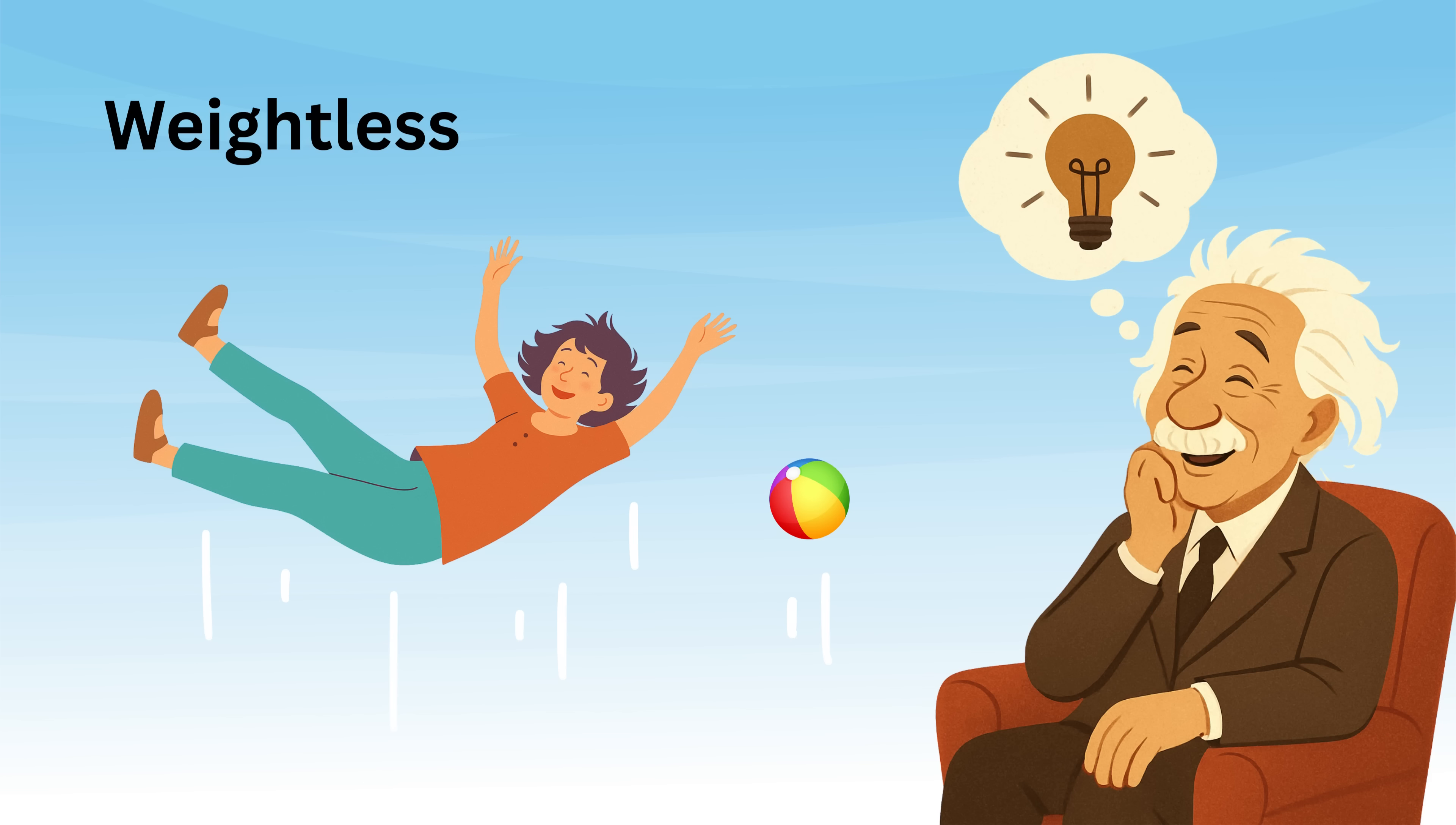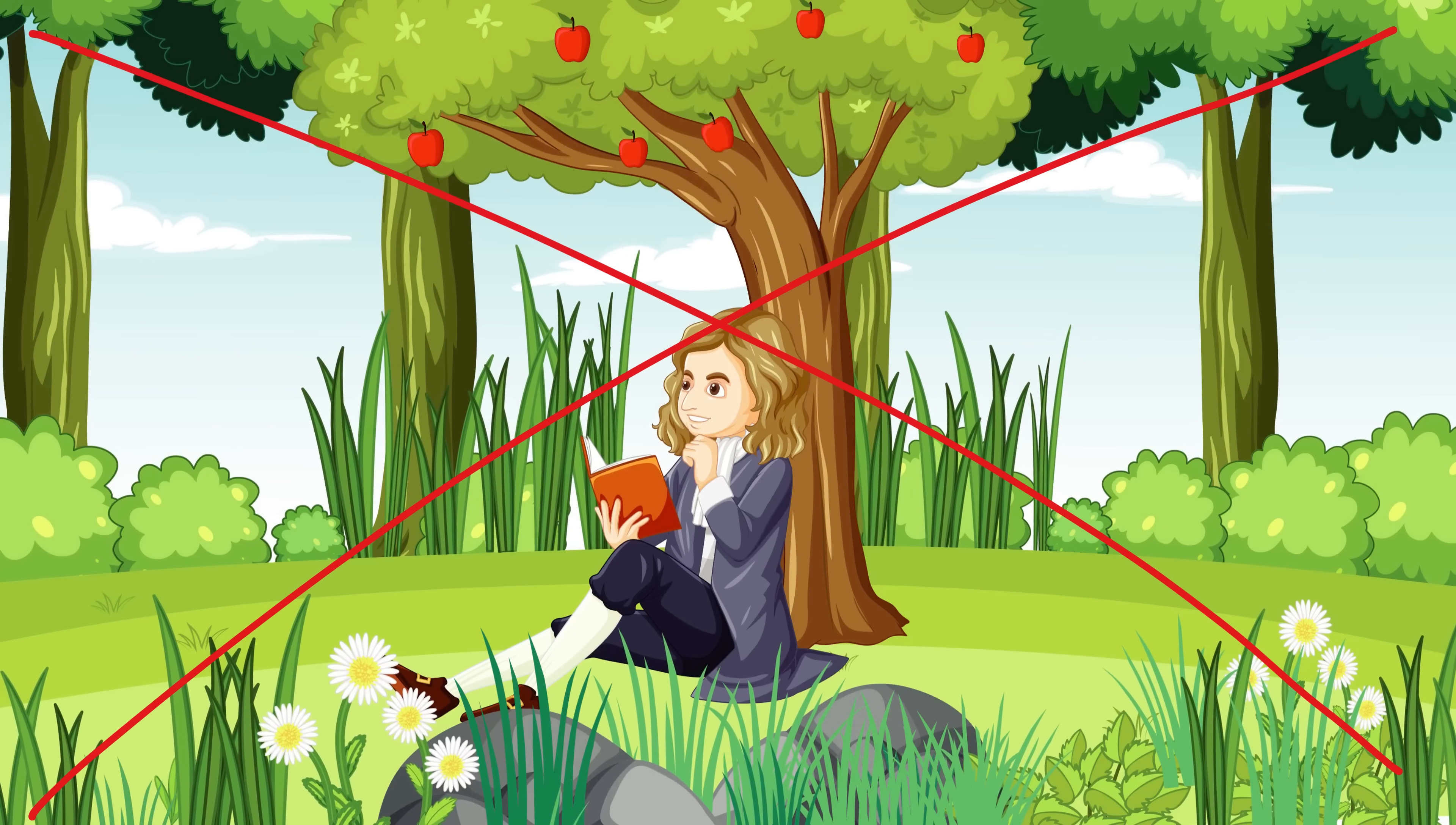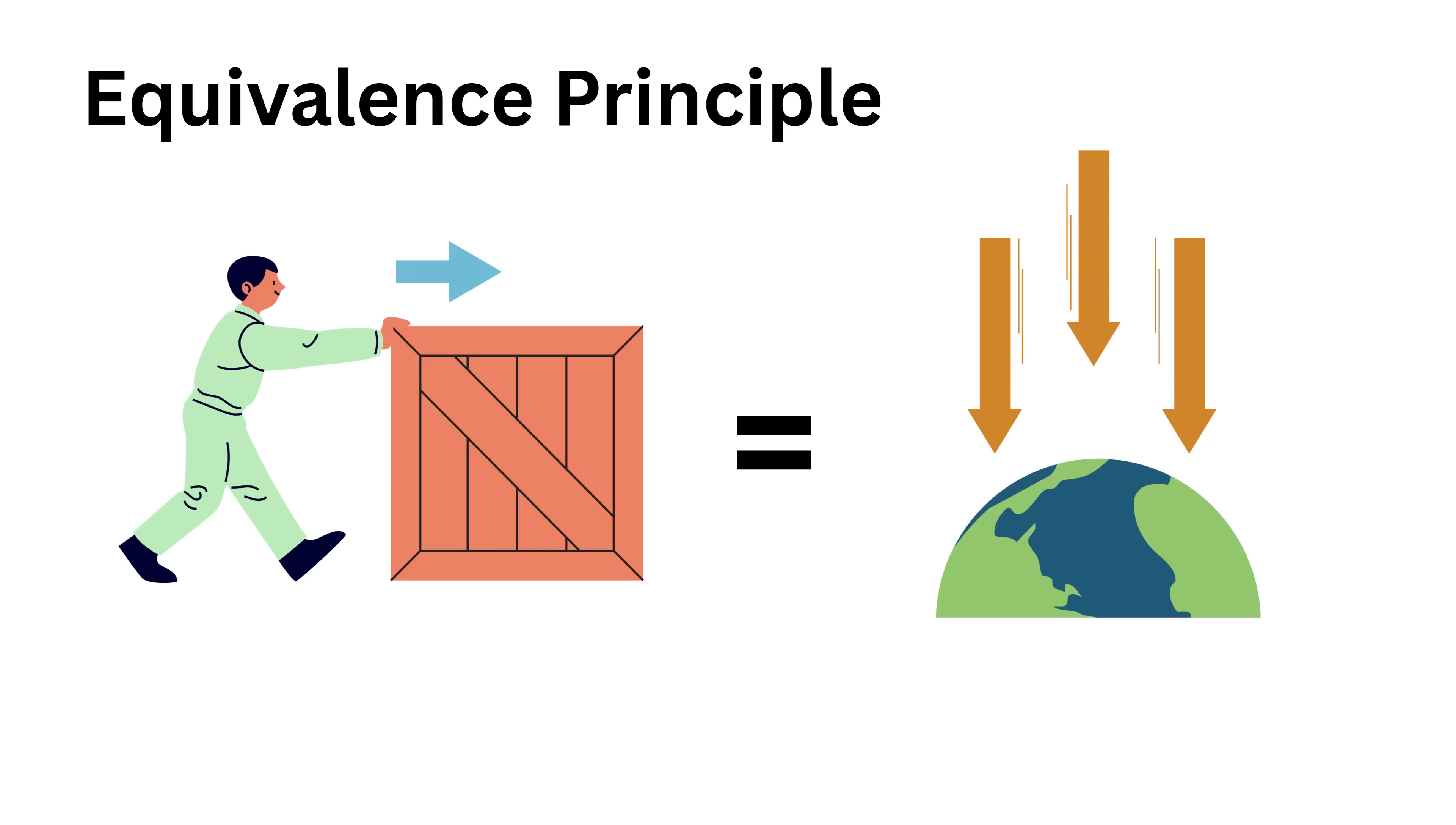This simple but deep thought experiment gave Einstein a thrilling insight. Maybe being in free fall is not so different from being in space where there's no gravity. Maybe gravity isn't just a simple force pulling things down. Acceleration and gravity would, in fact, be the same thing. This is what is called the equivalence principle, one of the cornerstones of general relativity.